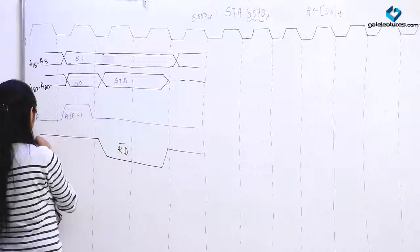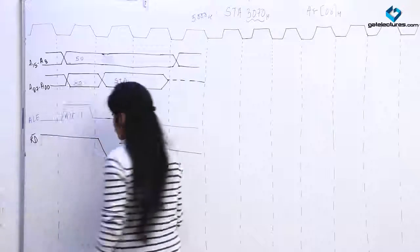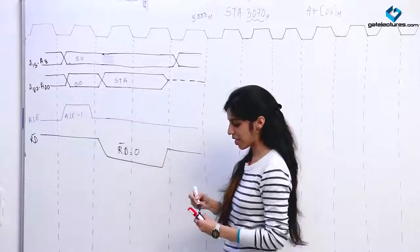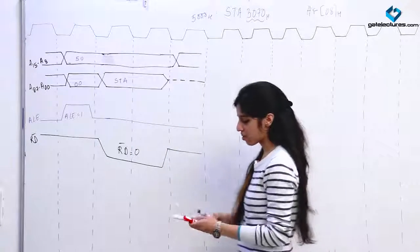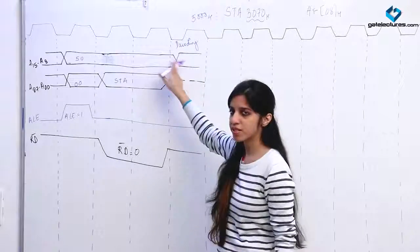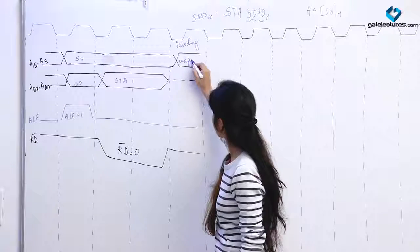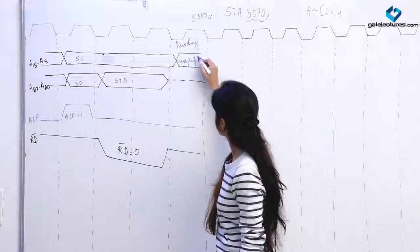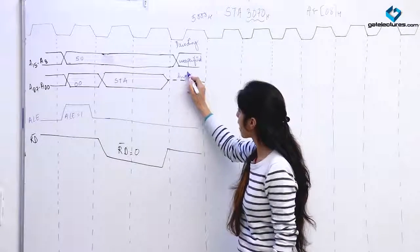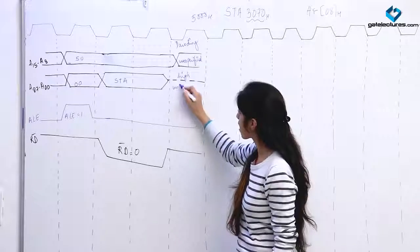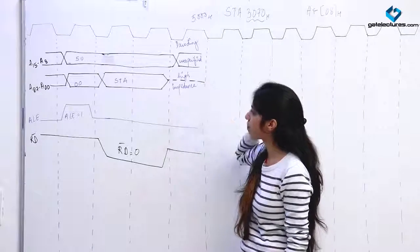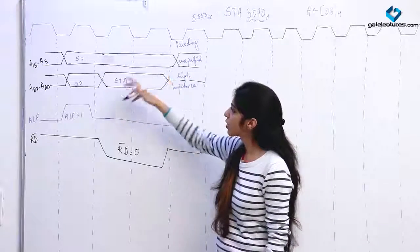Since read is active low, we are going to make read-bar 0 for these two clock pulses. Now we have got the instruction STA. This is the decoding cycle — during decoding, the contents of the address bus are unspecified and the data bus is made high impedance.